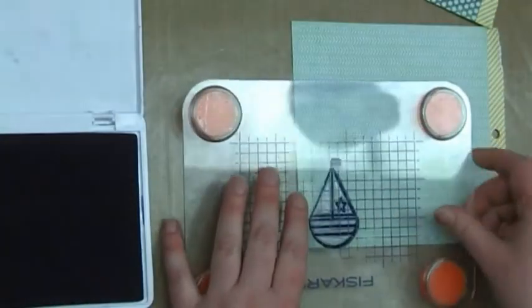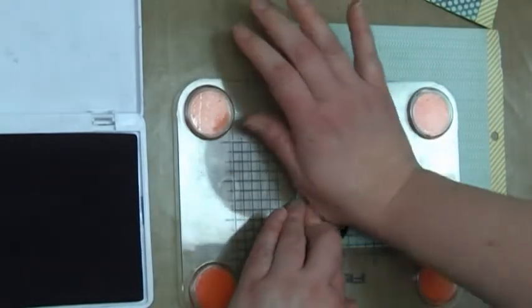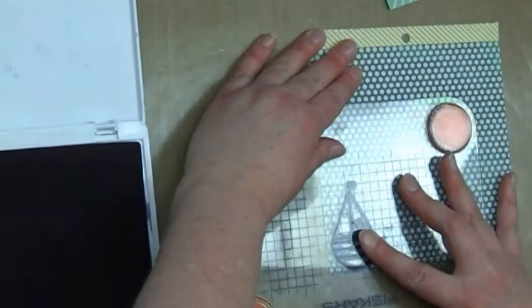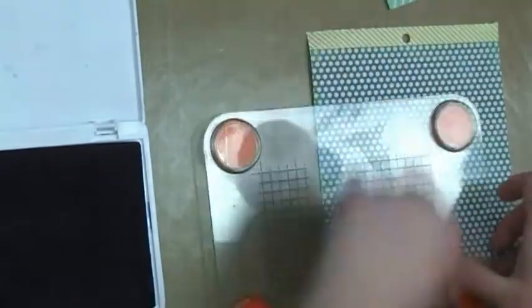I'm using the sailboat from that set and first I'm just going to stamp it with some Archival jet black ink onto three different pieces of My Mind's Eye coordinating paper.